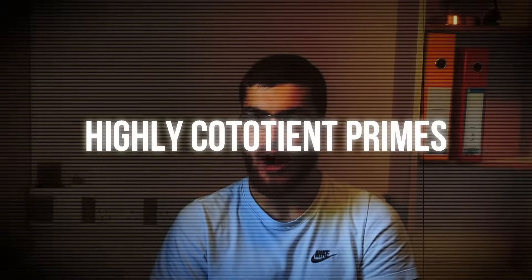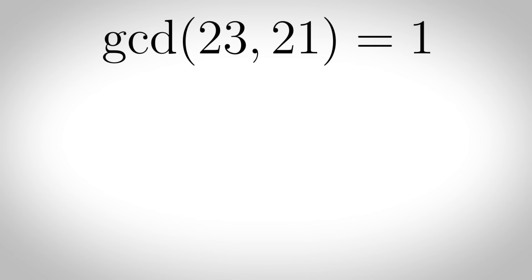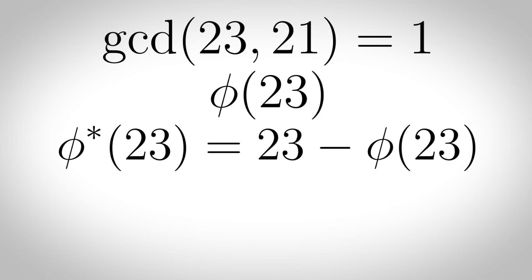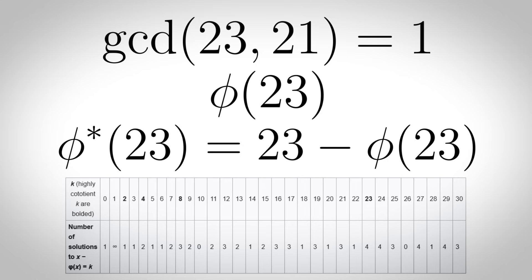Highly cototient primes: when the greatest common divisor of two numbers is 1 they are called coprime. Euler's totient function of n asks how many integers less than n are coprime to n. Then the cototient function is n minus the totient function of n — how many integers less than n share a common divisor greater than 1. A highly cototient number is a number that appears as a cototient more times than any smaller number does. Some of these are prime.